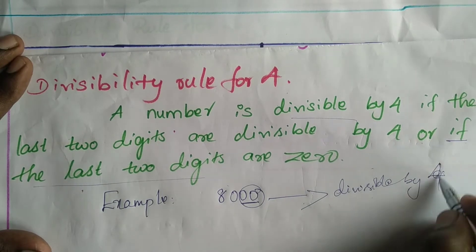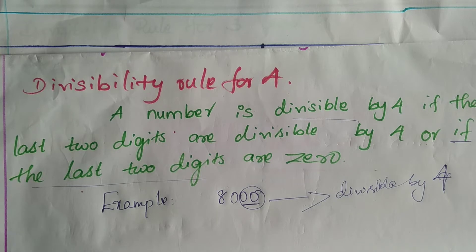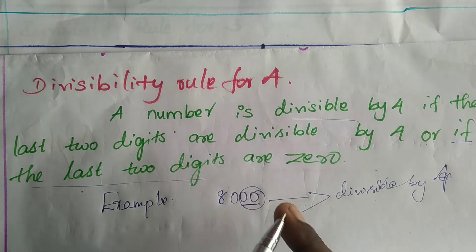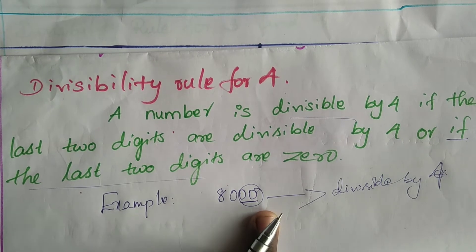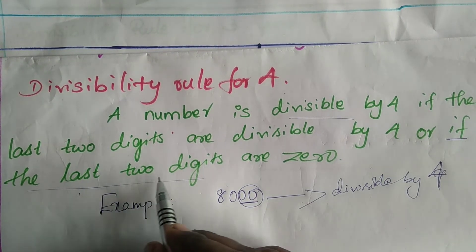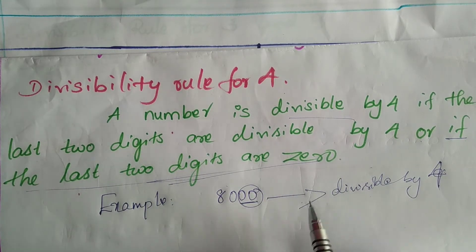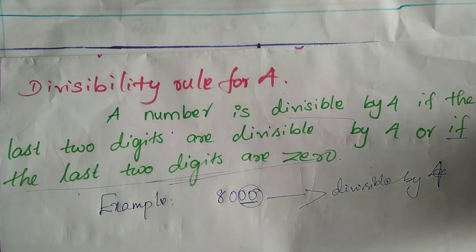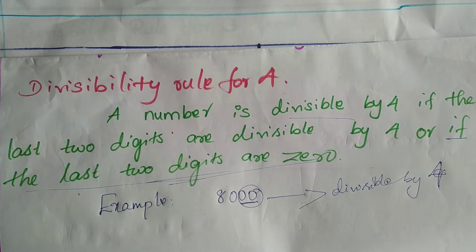These clue words help us easily identify divisibility. A number divides the given number exactly without any remainder — then we can say it is exactly divisible. If the last two digits are 0, at that moment itself we can say this number is surely exactly divisible by 4.